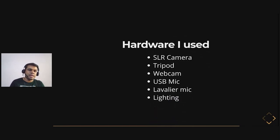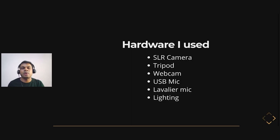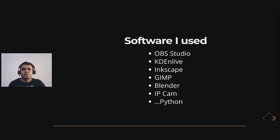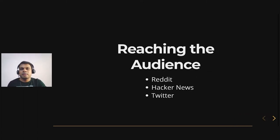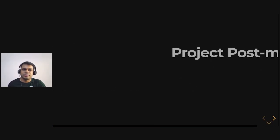For hardware, I use an SLR camera which gives tremendous video output. If you can't afford one, a mobile camera or webcam works too. Invest in a good microphone — audio quality is one of the most important factors. I use two mics: a USB Blue Yeti mic and a Boya lavalier mic. Lighting is equally important. For software, I use almost all open source: OBS Studio for recording, Kdenlive for video editing, Inkscape, GIMP, Blender for image editing, and IP Webcam as an Android app to use your phone as a webcam.